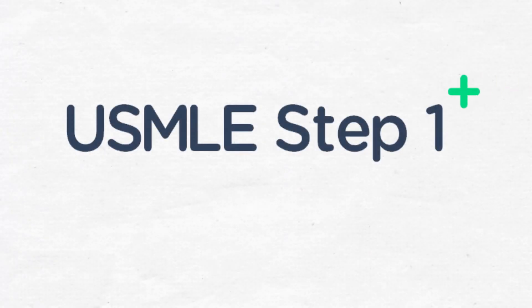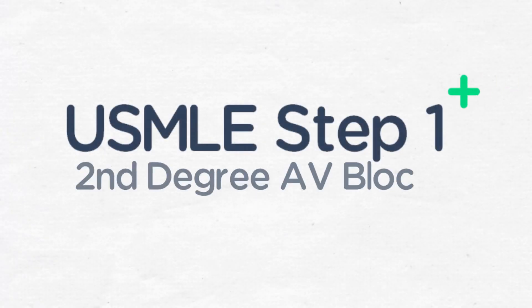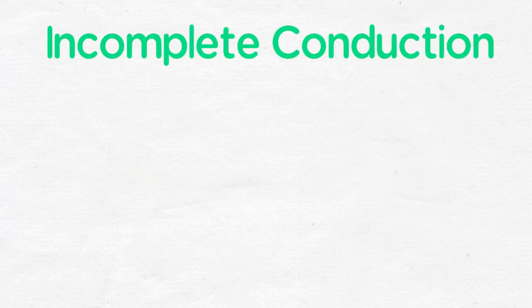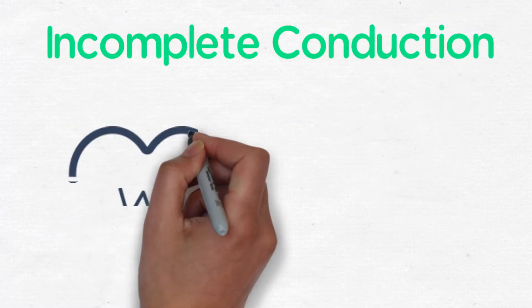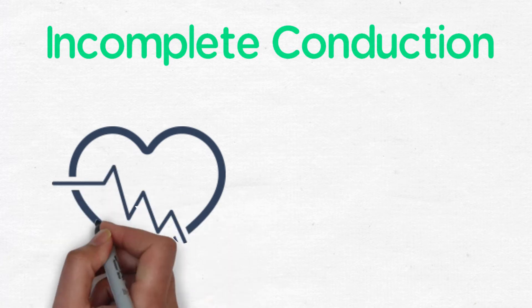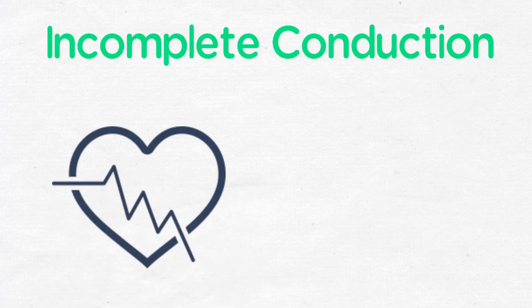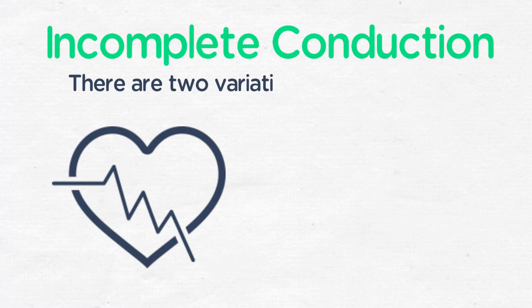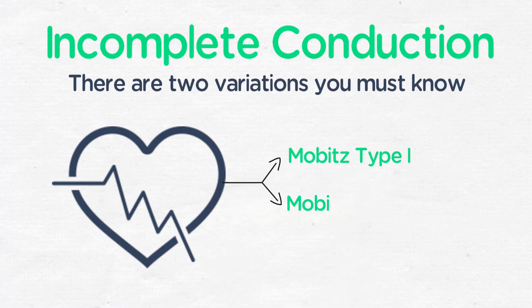I'm Dr. Bernstein, and we're going to be discussing second-degree AV block. This is an incomplete conduction which occurs at the AV node. Some signals from the SA node pass through and trigger QRS complexes, but some do not. There are two variants you must know and be able to recognize.